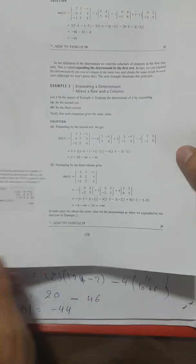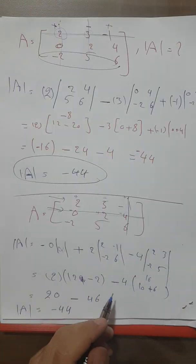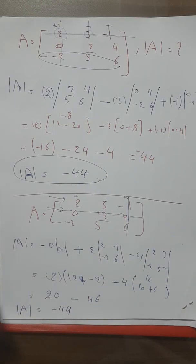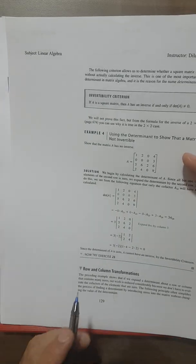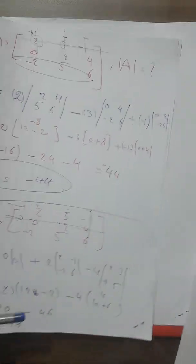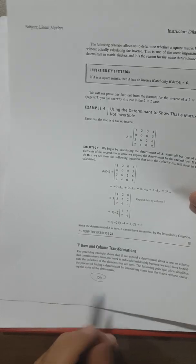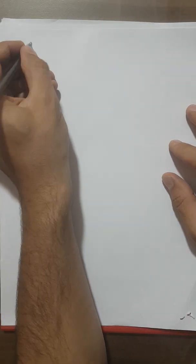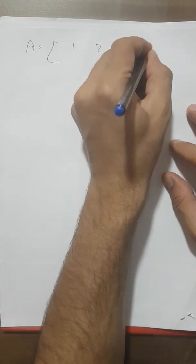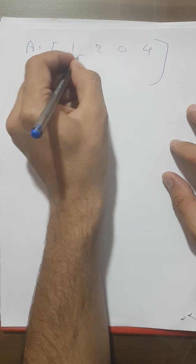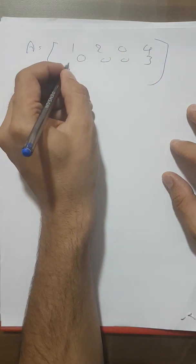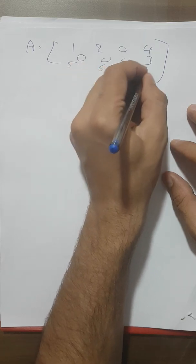Here's an important trick: when finding the determinant — especially for 4×4 matrices, as shown on page 129 — try to expand along a row or column that contains zeros. For example, if A = [1, 2, 0, 4 / 0, 0, 3, 0 / 5, 6, 2, 6 / ...], choose the row or column with the most zeros because zero times anything is zero, which eliminates those terms and simplifies the calculation greatly.